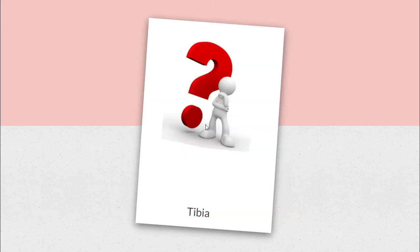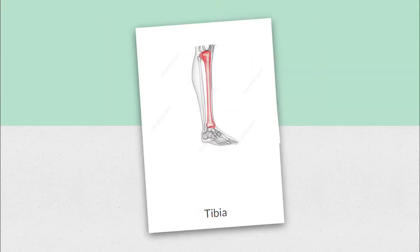Moving on — next one: tibia. The tibia is a bone that is also commonly known as your shin bone. Think about where that is located. The tibia is your shin bone — it extends from your knee all the way down to the very top of your foot. This is where your tibia is located.